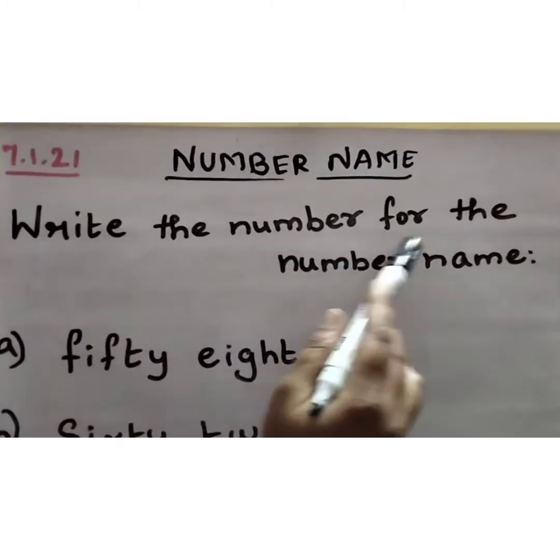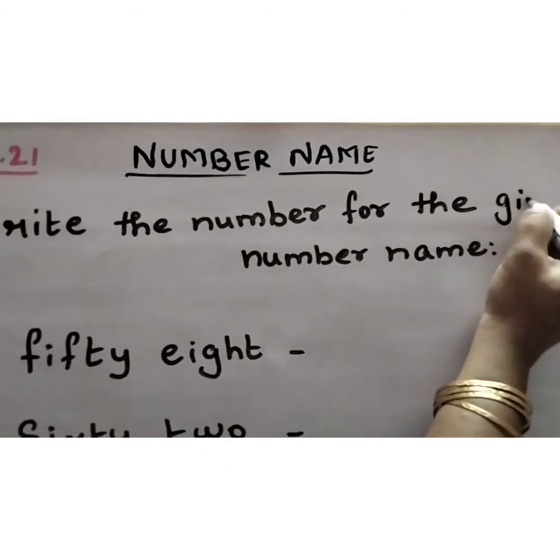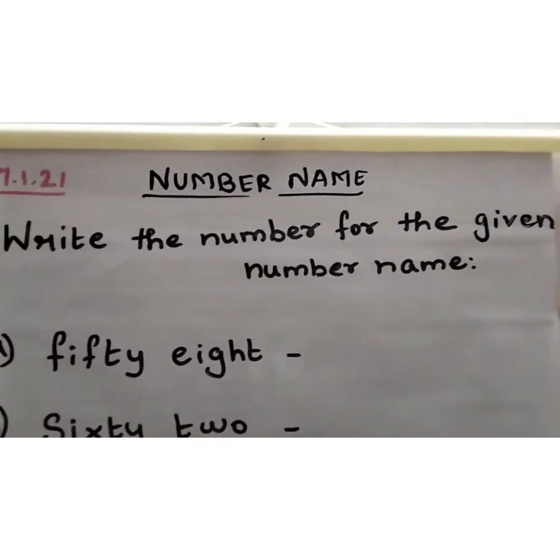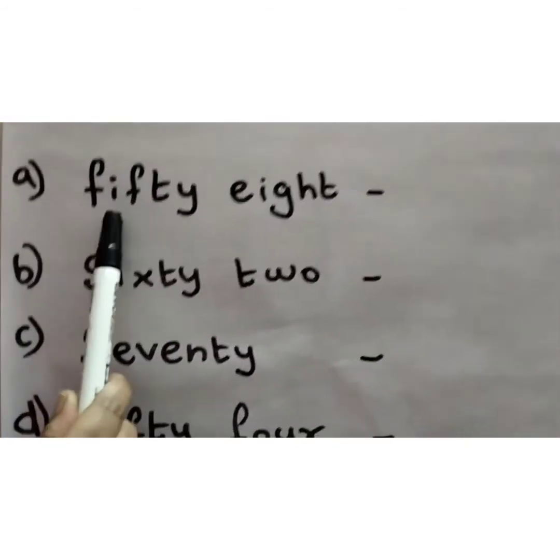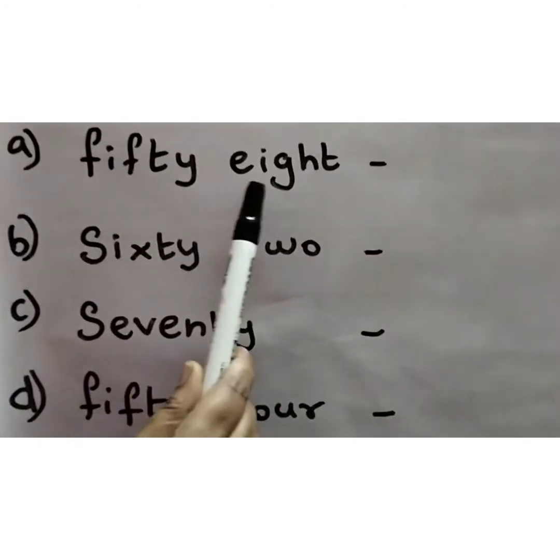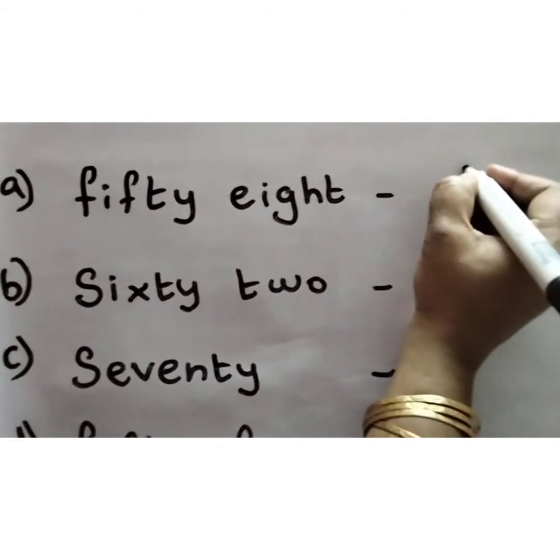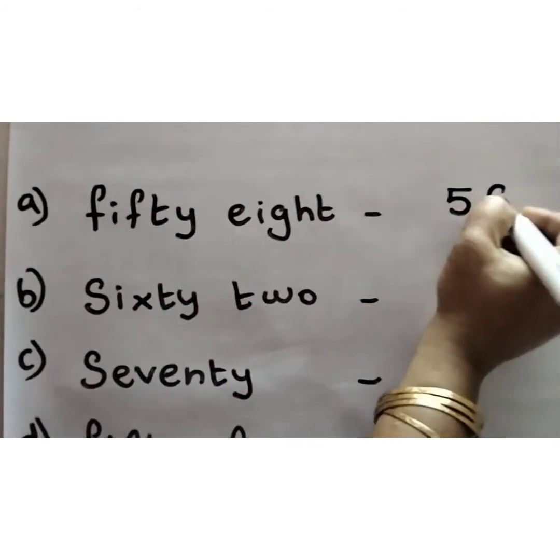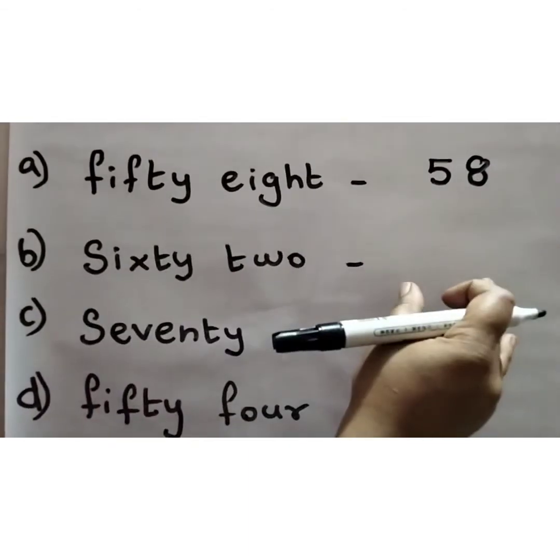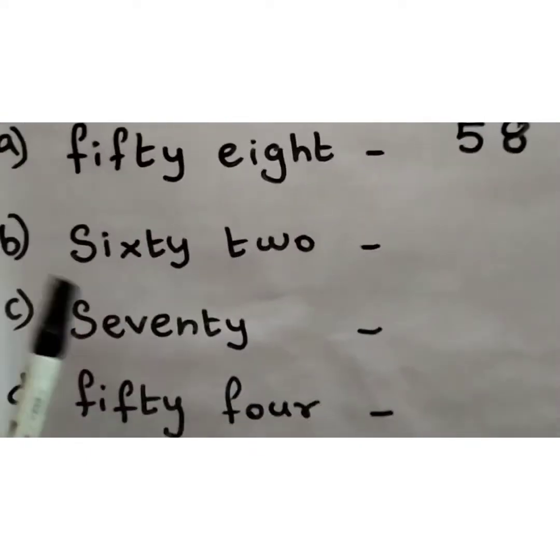So write the number for the number name. Write the number for the given number name. So read the first one. F-I-F-T-Y E-I-G-H-T, 58. So you have to write 58. So the number name will be given. You have to write the number for the given number name. So what is the next one?